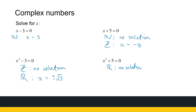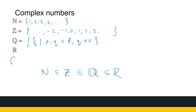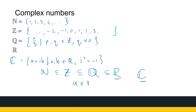Now we've got a complex number system. These complex numbers are all expressions a plus ib where a and b are real numbers and i squared equals minus one. The question is: is there a link between the real numbers and the complex numbers? If the real numbers are a subset of the complex numbers, then every real number must also be a complex number. If a is a real number, I can write it as a plus i times zero — so I just choose b to be zero. Every real number can be written as a complex number, meaning the real numbers are a subset of the complex numbers, but it doesn't go the other way around.